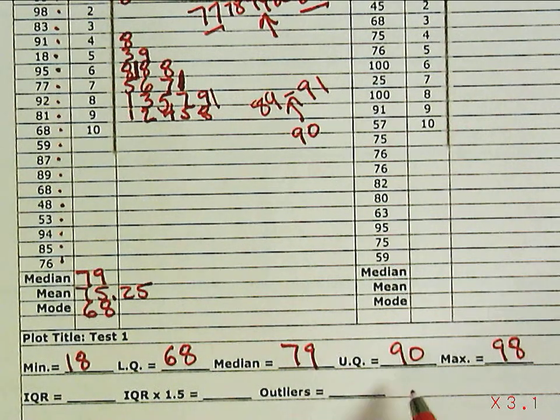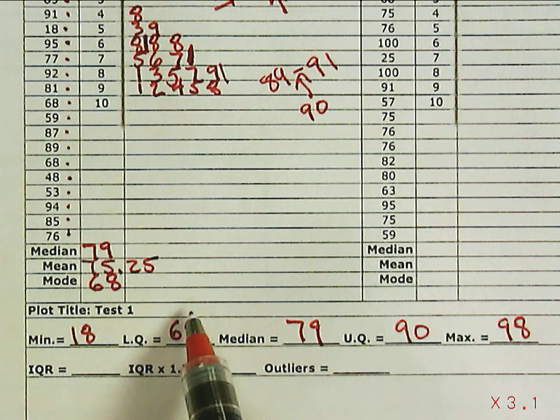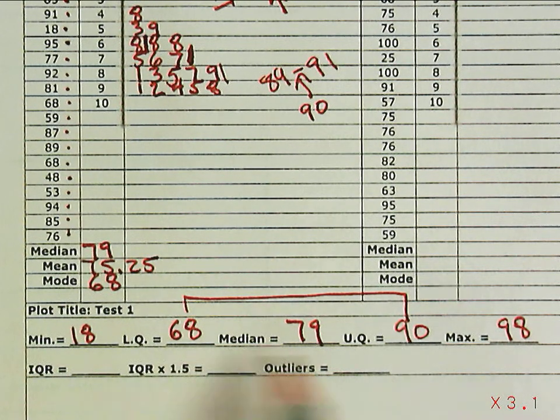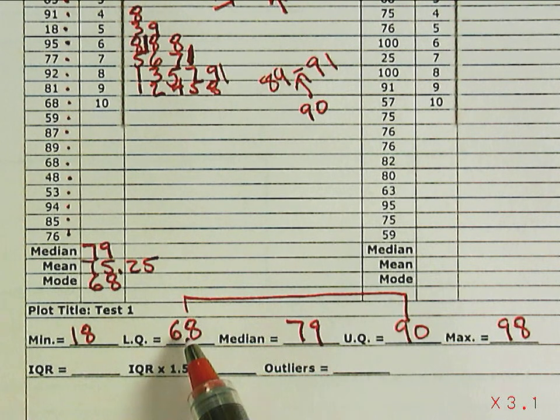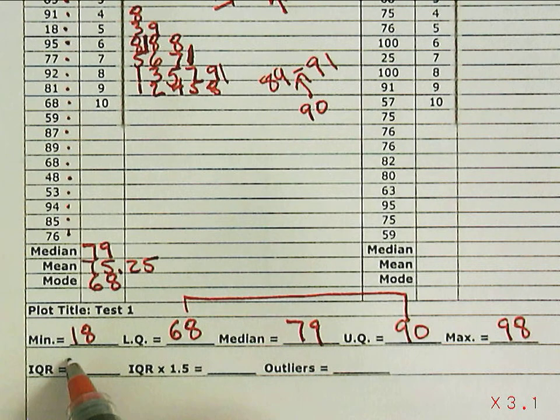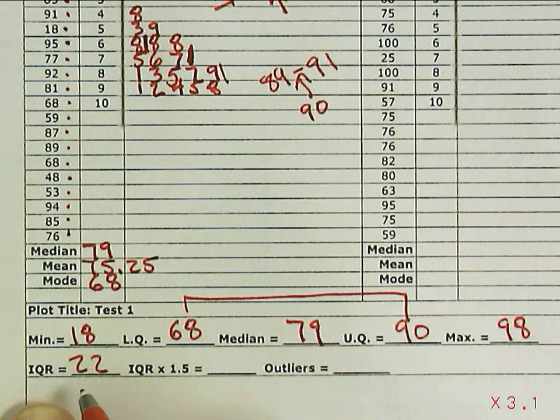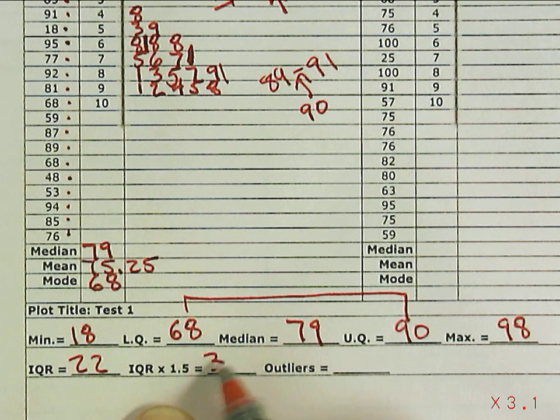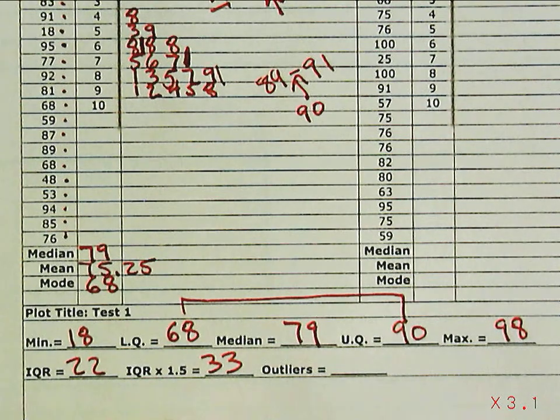Now I have my five-number summary, and I can use that to find what's called the IQR, or interquartile range. It's the distance or difference between the 68 and the 90, the quartiles. That's the IQR. So 90 minus 68 is 22. That's the IQR, and then we multiply that times 1.5. So 22 times 1.5 is 33.